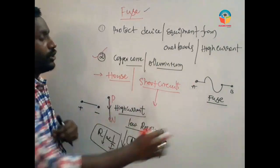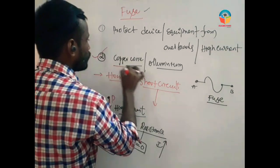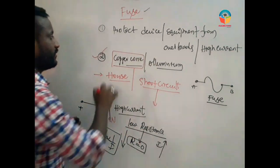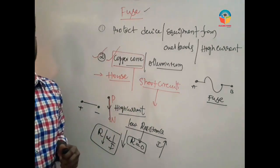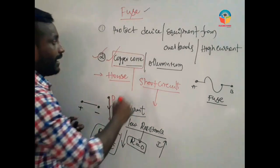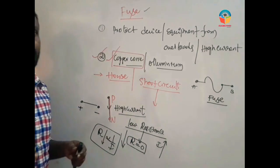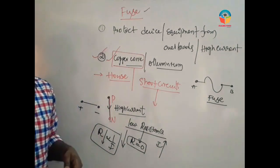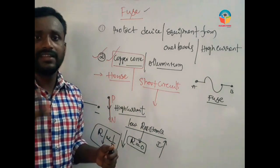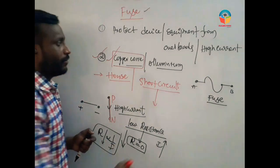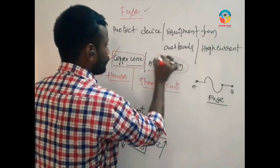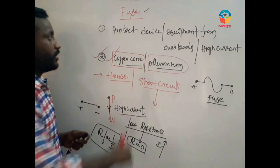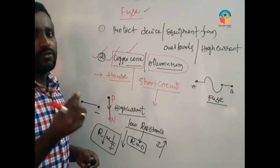Fuse wire is made from copper wire or aluminum. If we choose wire for houses, we use copper wire. For transformers and transmission lines, we use power poles with aluminum wire. So, copper wire is used in household applications and aluminum is used in transmission line applications.